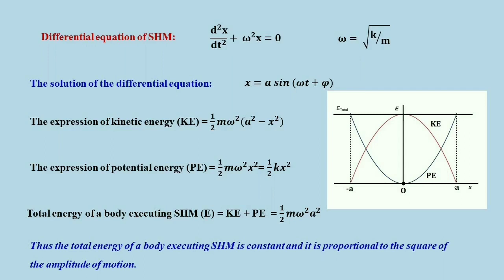In this solution, A is called the amplitude of motion, that is the maximum displacement from the equilibrium position, ω is the circular frequency, and the total term inside the bracket (ωt plus φ) is called the phase, whereas φ is called the initial phase of motion. Using this expression for x, we have already determined expressions for velocity, acceleration, kinetic energy, and potential energy.